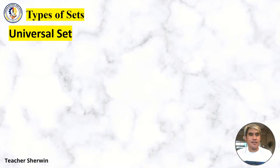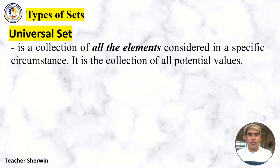Types of Sets. Universal Set is a collection of all elements considered in a specific circumstance. It is the collection of all potential values. It is denoted as letter U.